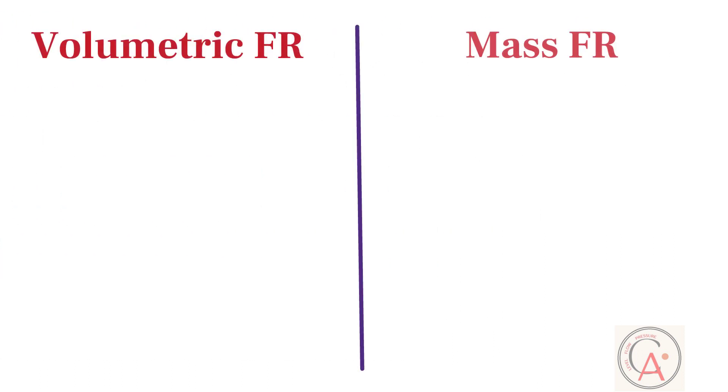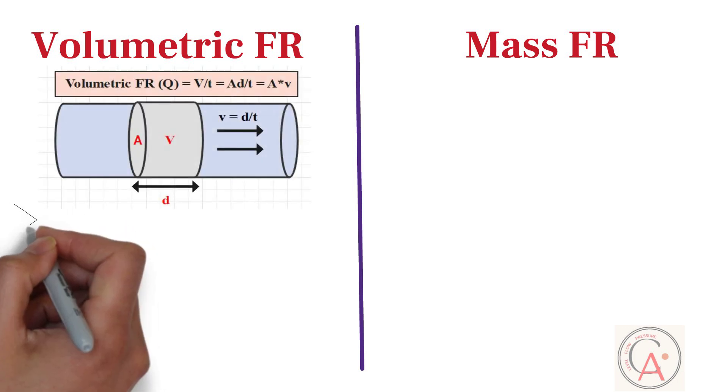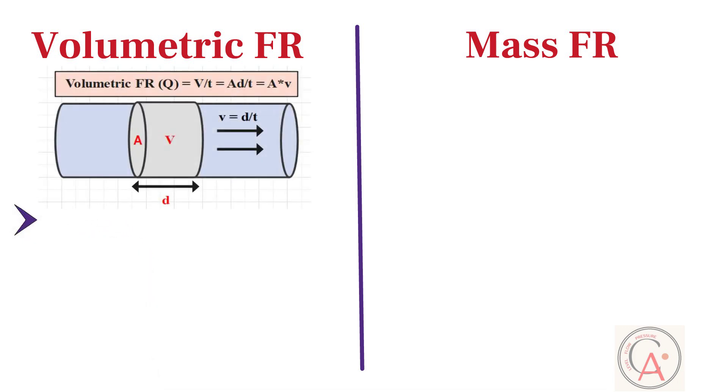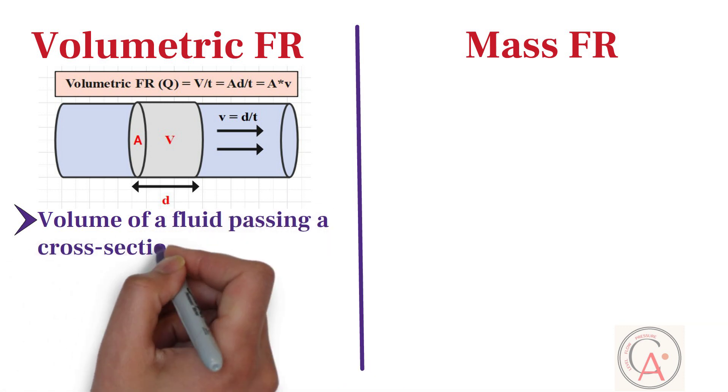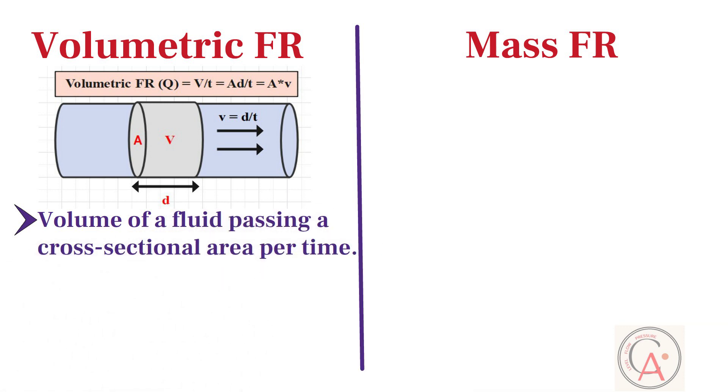First of all, let's learn what is volumetric flow rate. Volumetric flow rate can be defined as volume of a fluid passing a cross sectional area per time. In other words, it is the amount of fluid moving through a process line per period of time such as meter per hour or barrels per day.